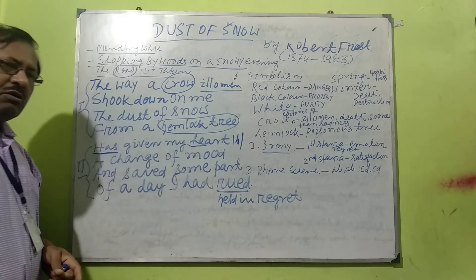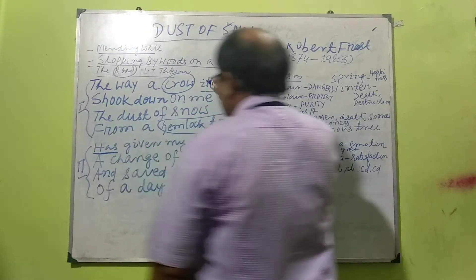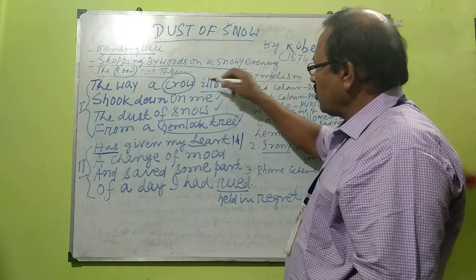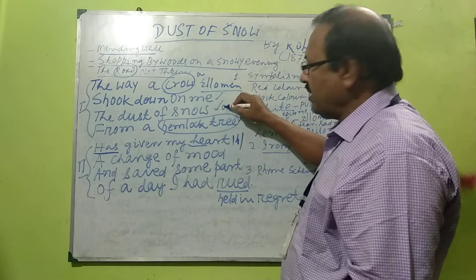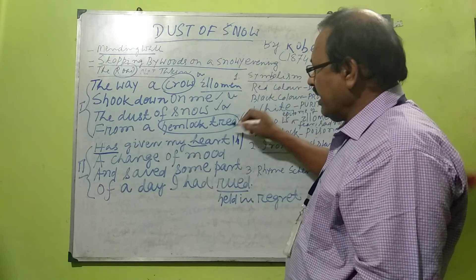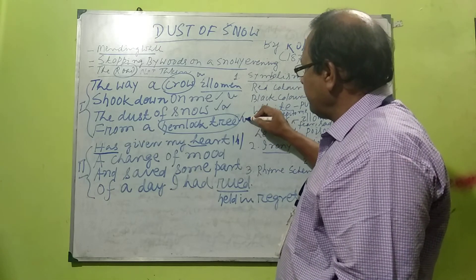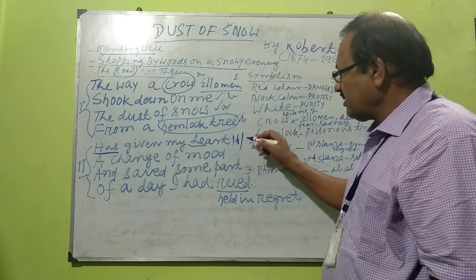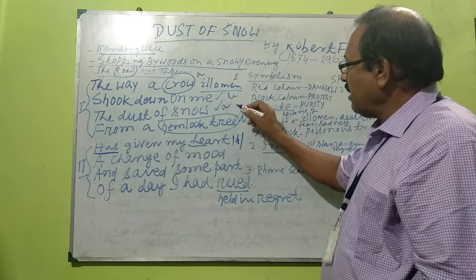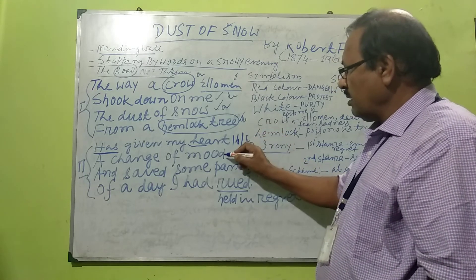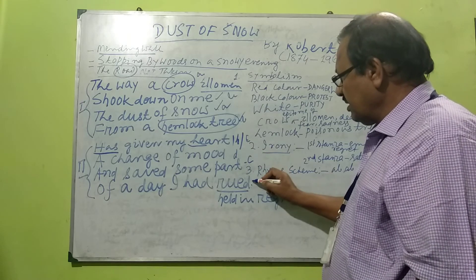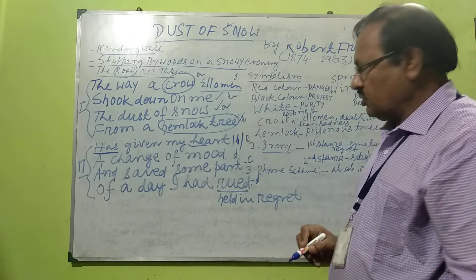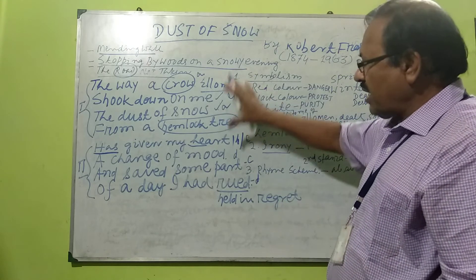Let us come to the rhyme scheme. The first line ends with 'crow,' the second line with 'me,' the third line with 'snow,' and the fourth line with 'tree.' Crow and snow rhyme — so they are A. Me and tree rhyme — so they are B. The rhyme scheme of the first stanza is ABAB. In the second stanza: 'heart' and 'part' rhyme — C, and 'mood' and 'rued' rhyme — D. So the rhyme scheme of the second stanza is CDCD.